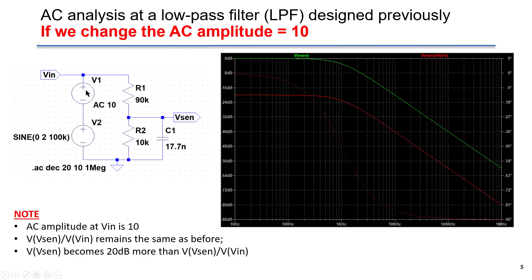This is the same schematic, but we change V1 so that the amplitude is changed to 10. In this case, if we look at the Bode plot of Vsense, it becomes 20 dB bigger, because the disturbance at V1 is 10 times larger — and 10 times corresponds to 20 dB. If we use Vsense over V1, this is the transfer function of Vsense over V1. It remains the same even though you change the AC amplitude.